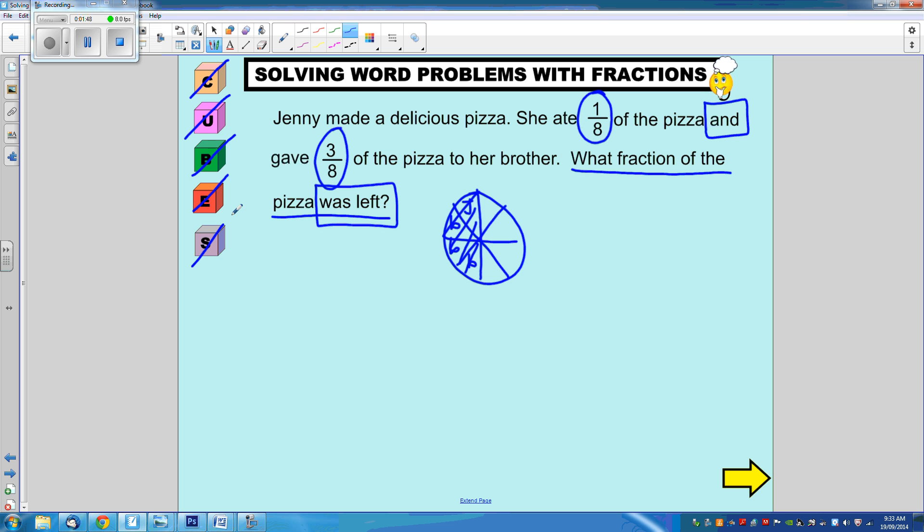So now I need to solve and show my working and then check to make sure we got the right answer. So what I did was 1 eighth plus 3 eighths. Our denominators are the same so we just need to add across the top equals 4 eighths. And we can see that in how many of the eighths we colored in.